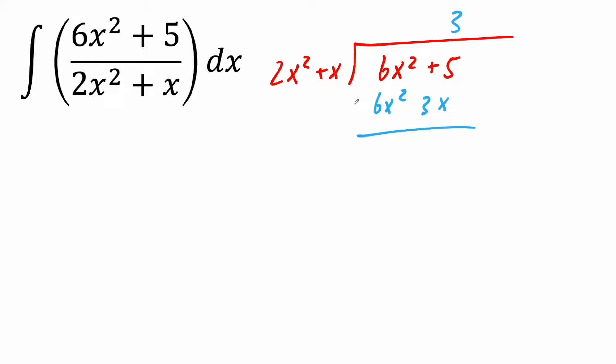Then we're going to subtract, so negative, negative. So it cancels out, and then we have negative 3x plus 5. So let's write that down, negative 3x plus 5. And this will be our remainder.